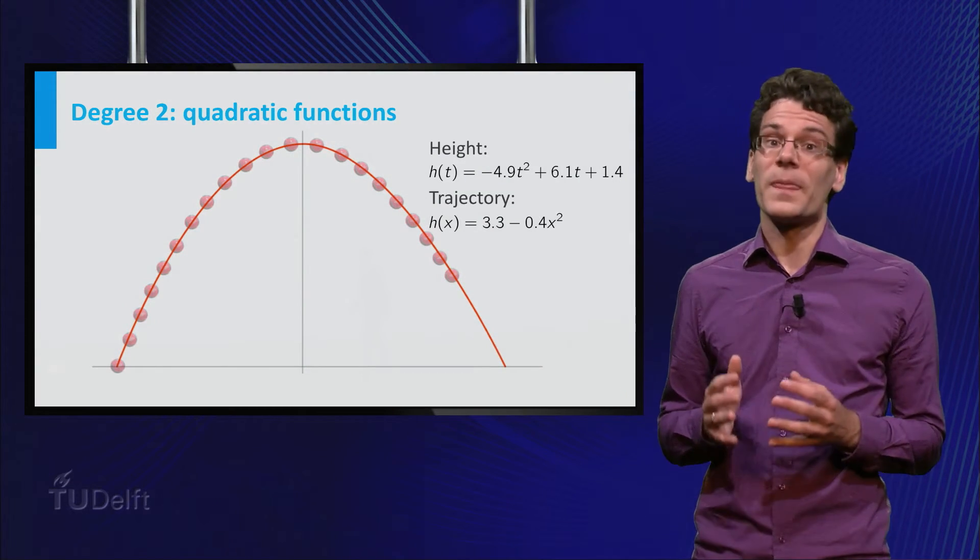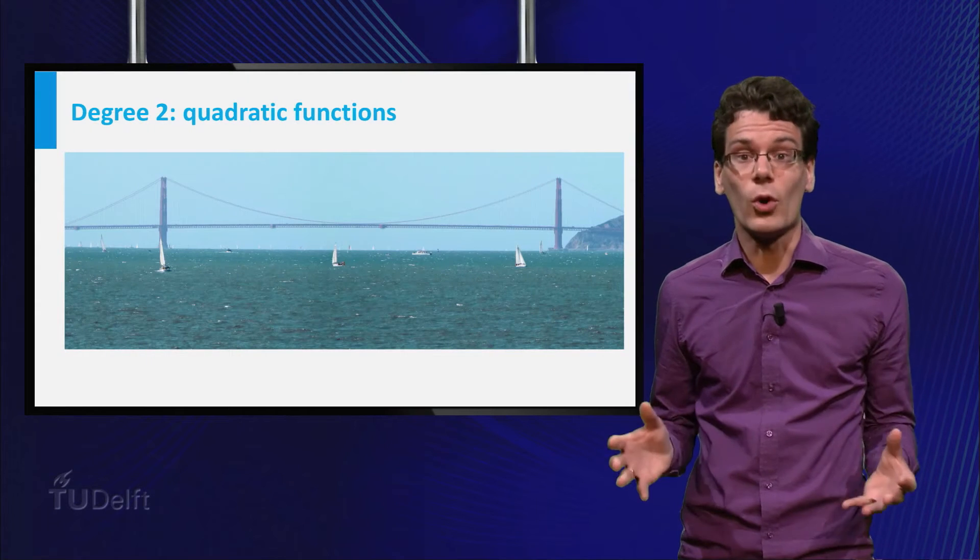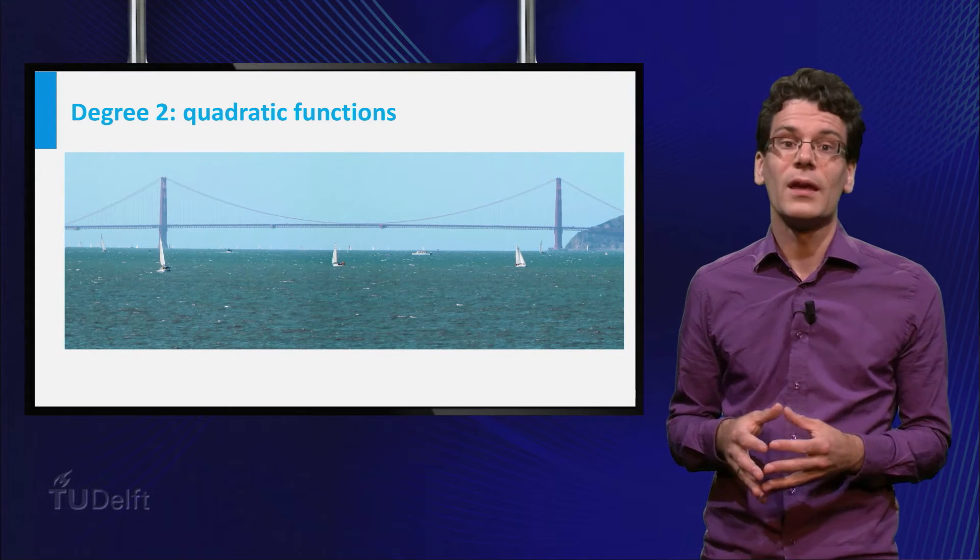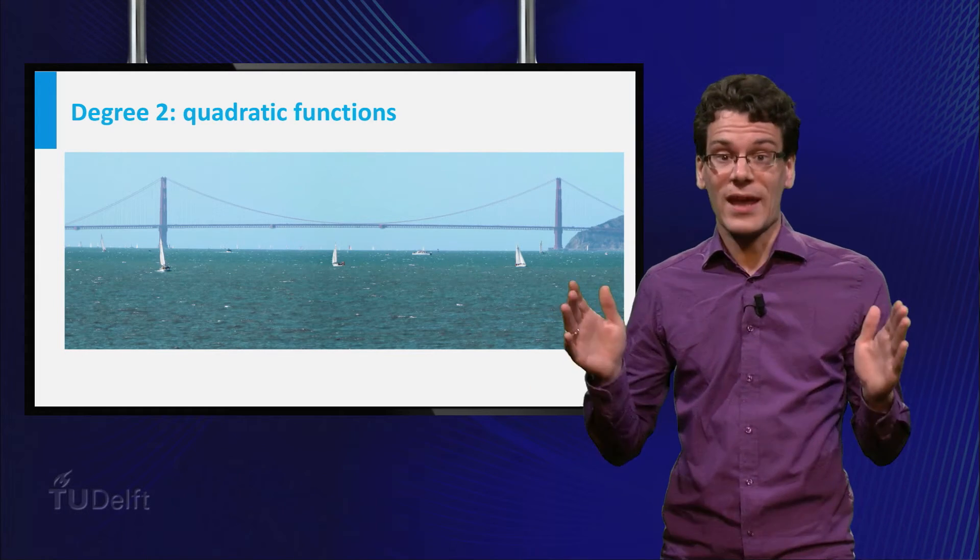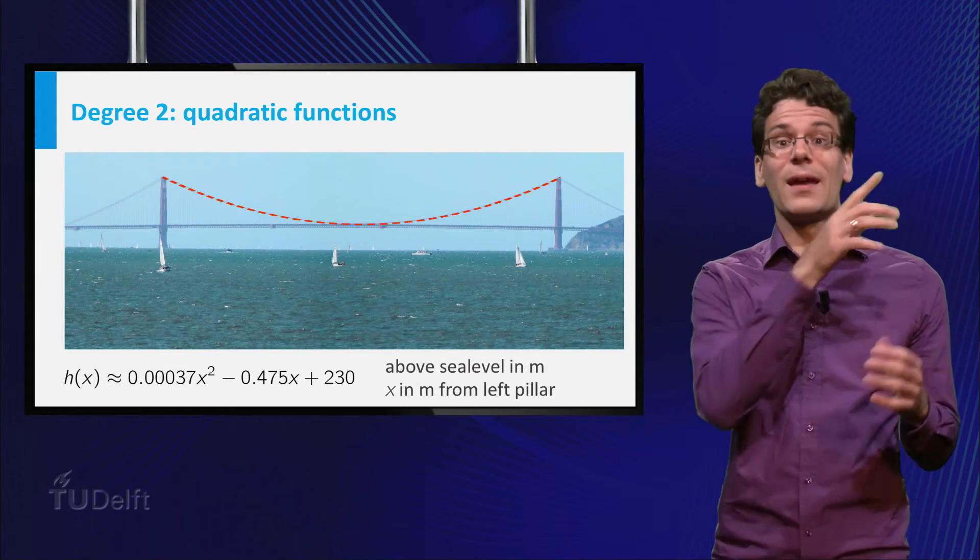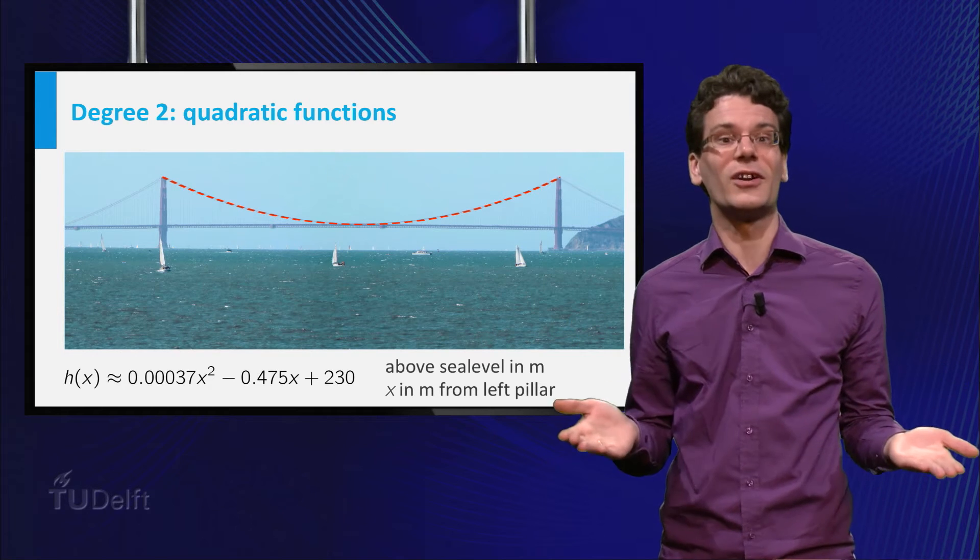A very different example is a suspension bridge, such as the Golden Gate Bridge in San Francisco. If the cables are much lighter than the deck they carry, the shape of the cables between the pillars can be approximated by a quadratic function.